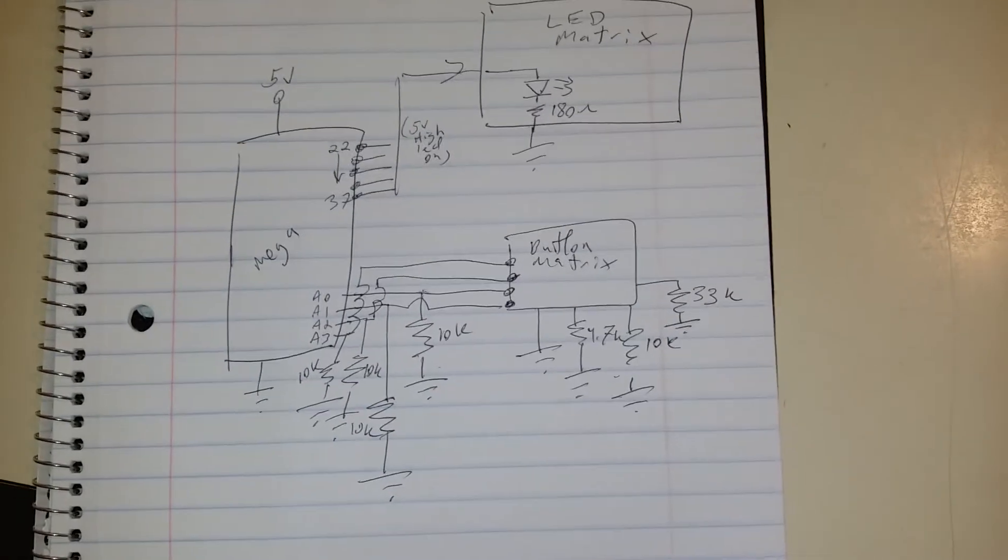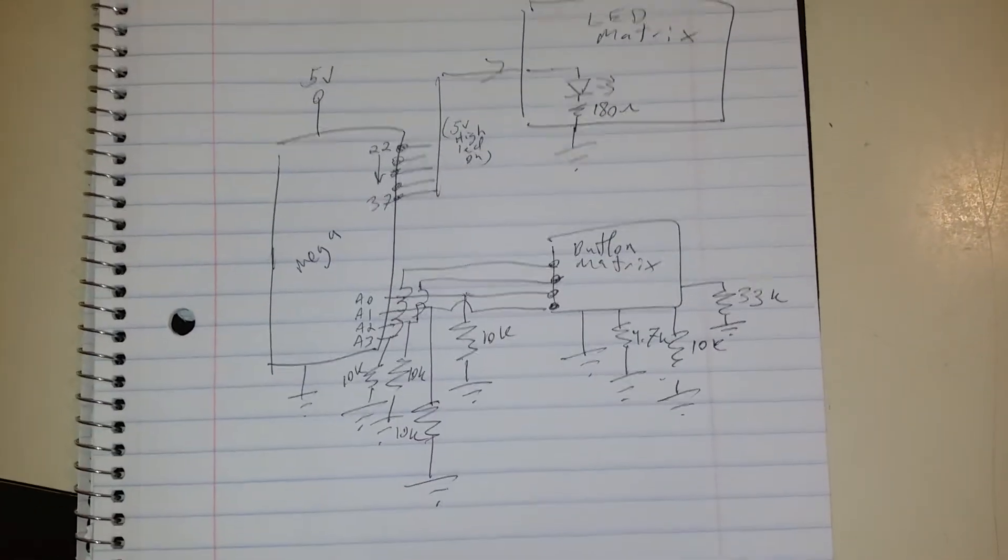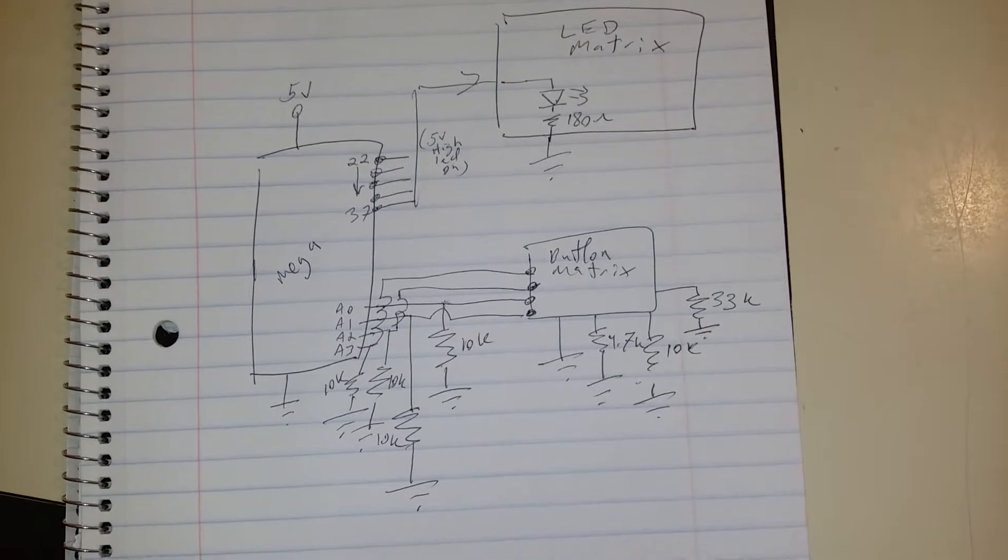Basically what I am doing is varying the voltage that the Mega sees on the input pins using the analog read function.